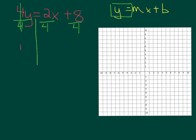So y = 2/4. That fraction can be reduced to 1/2. So y = 1/2 x plus 8 divided by 4 is 2. After you divide everything by 4, my equation is y = 1/2 x + 2.